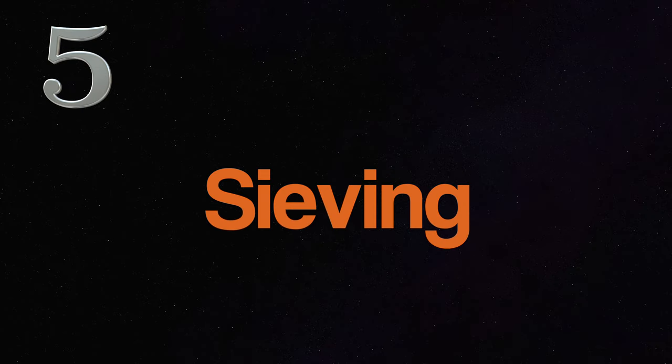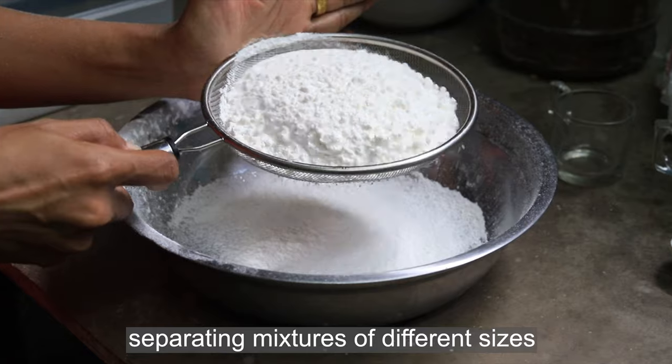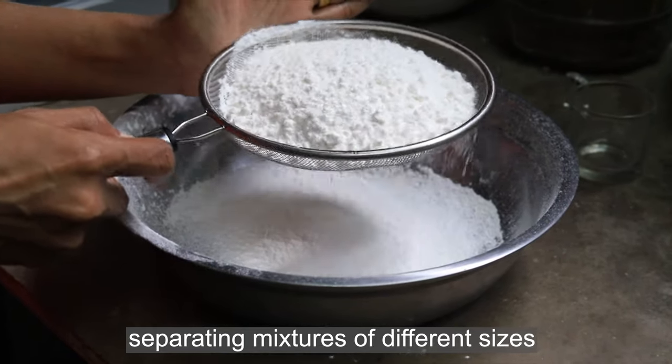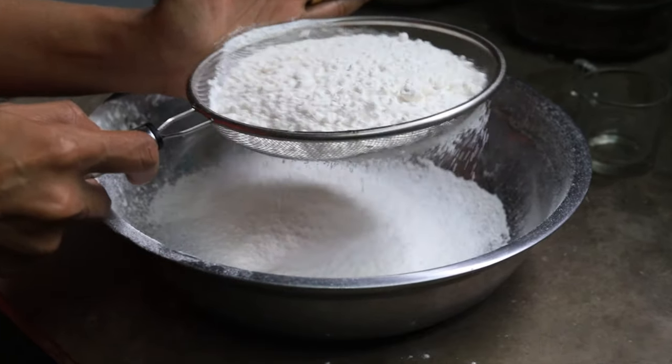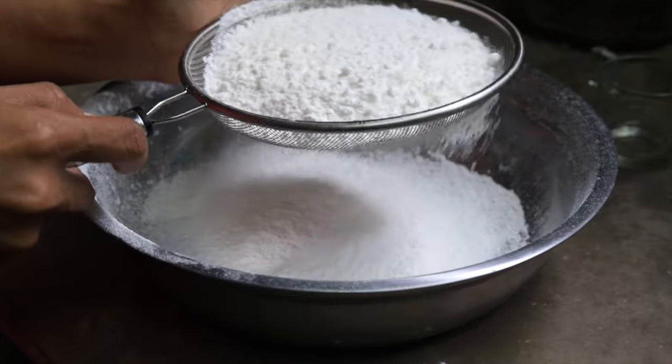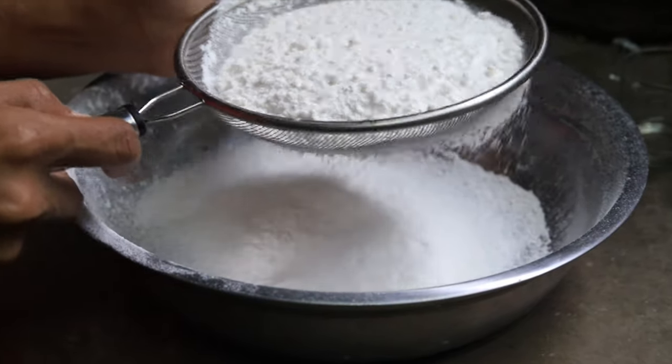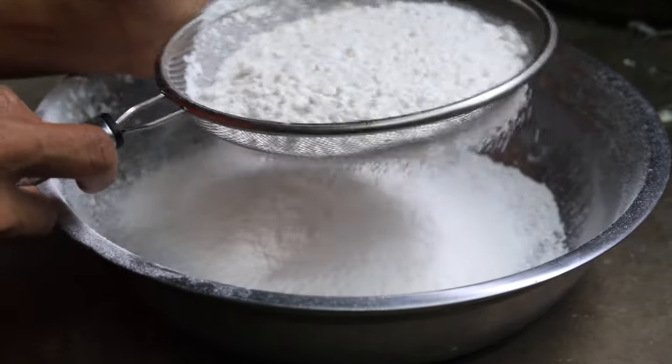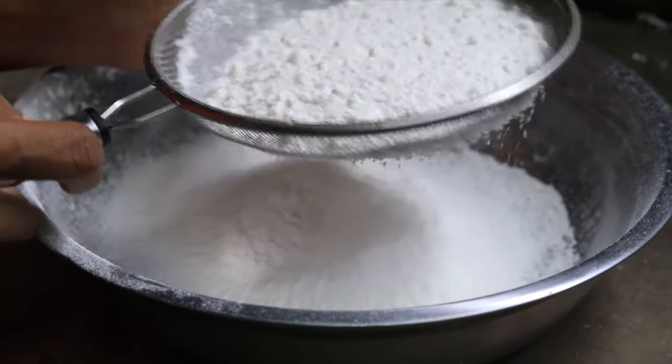Number 5. Sieving. Sieving is used to separate mixtures that contain substances mostly of different sizes. The mixture is passed through the pores of the sieve. The smaller substances pass through easily while the bigger components of the mixture are retained.